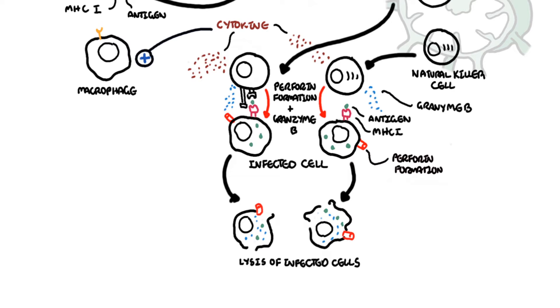Macrophages get attracted to these sites of inflammation and become activated by the pro-inflammatory cytokines, causing them to release more cytokines to help out, and to recruit more inflammatory cells.